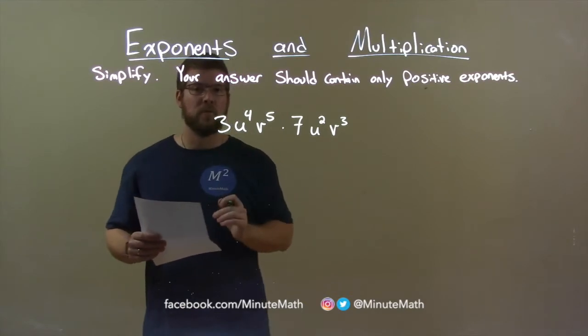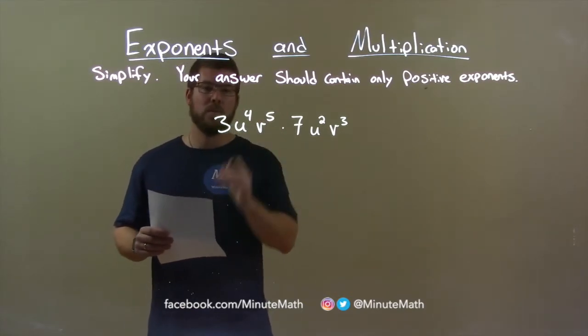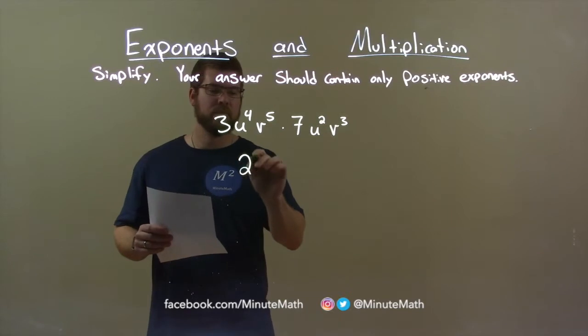First thing, I look at the coefficients. We have a 3 and a 7. When we multiply them, 3 times 7 is 21.